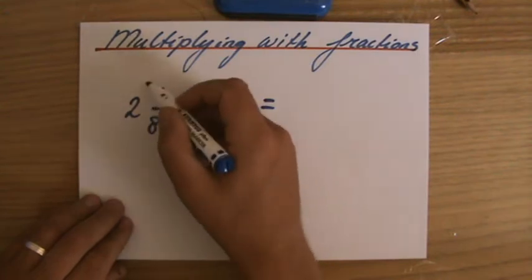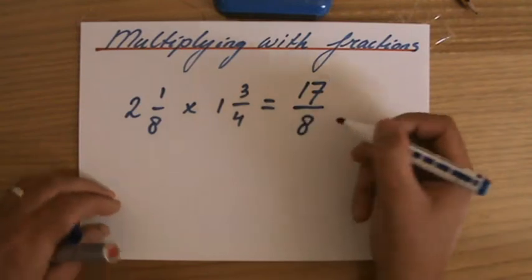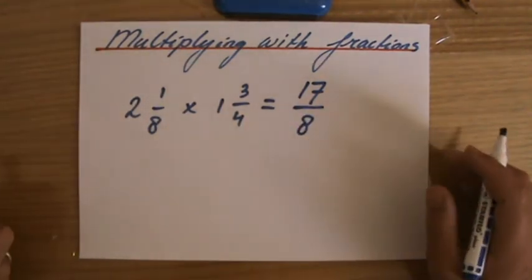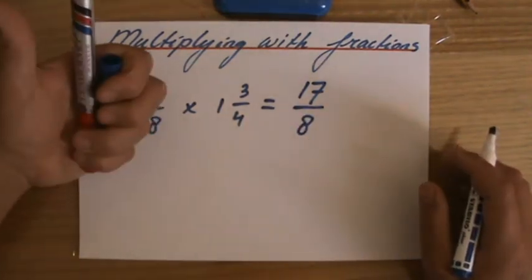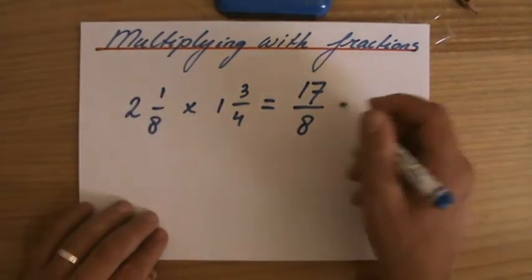2 times 8 is 16, plus 1 over 8. So 17 over 8. I explain in more detail how to find the top-heavy fraction in a different video, so I'm not going to talk too much about that.